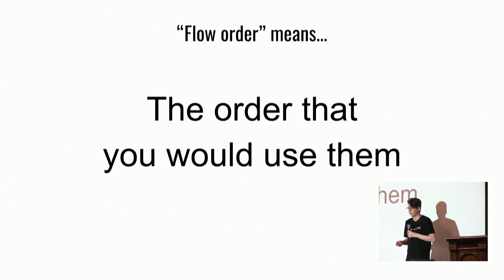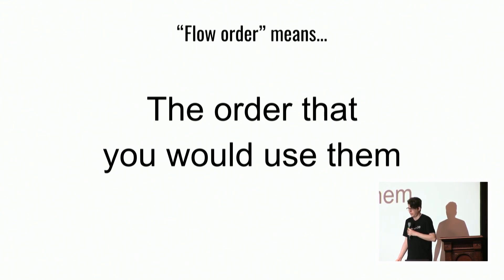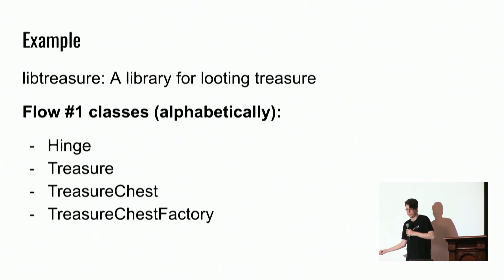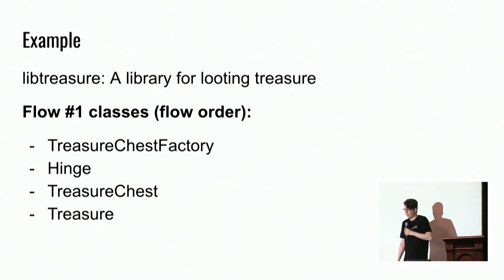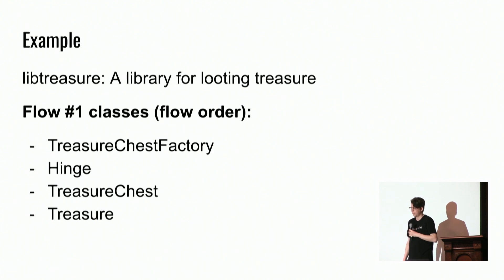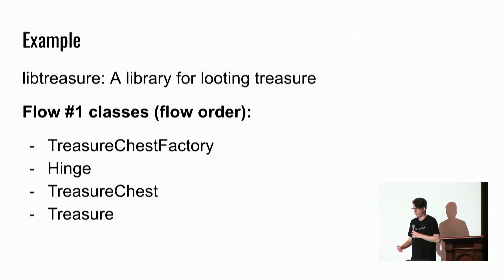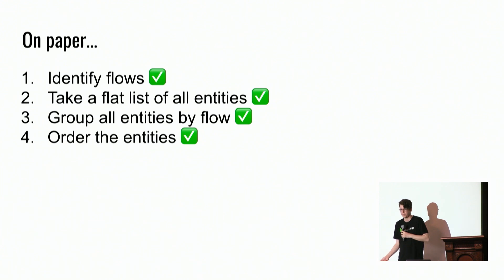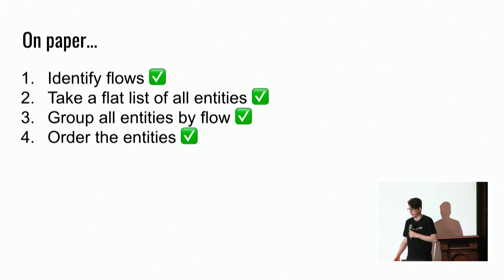Then order the entities by flow — meaning the order you would use them to accomplish the task. In libtreasure, alphabetically you'd have: Hinge, Treasure, TreasureChest. But in flow order: TreasureChestFactory first (it gives you a TreasureChest), then Hinge (passed into the factory), then TreasureChest (what you get from the factory), then Treasure (what you get from the chest). That's all the paper work done. Now it's time to edit some code comments.